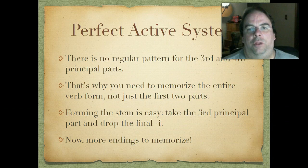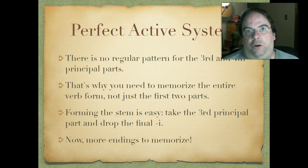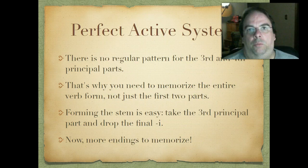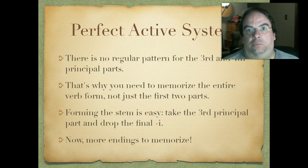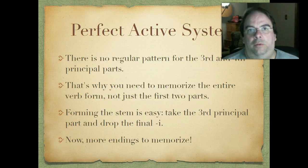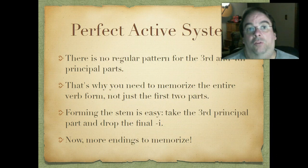There's no regular pattern for the third and fourth principal parts. Unlike all those memorizations we had to do with the previous conjugations, the main thing we're going to have to do is just memorize the verb form. So if you have been committing those to memory, this is going to be much, much easier. Forming the perfect stem is going to be dead simple — drop the I from the third principal part and that's going to be your perfect active stem. Then we're going to put some new endings onto it.